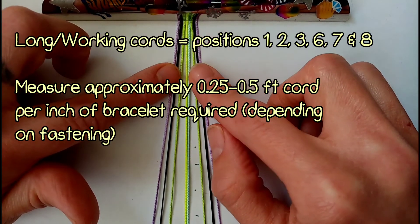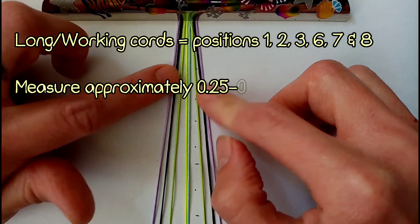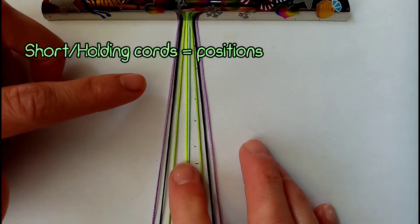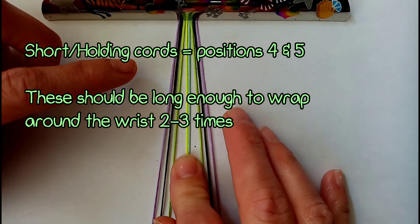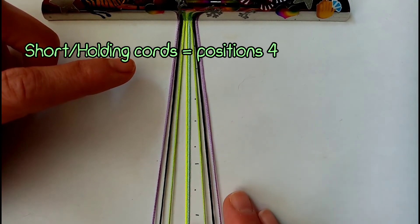These should be half a foot long for every inch of bracelet required depending on the fastening you are using. The short cords should be in positions 4 and 5. These cords will only be worked over so they should be long enough to wrap around the wrist 2 to 3 times.